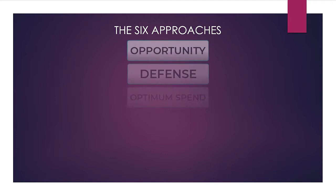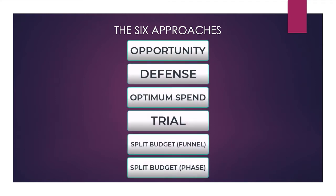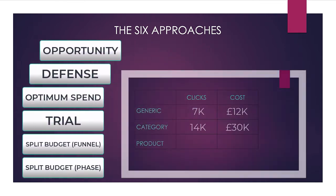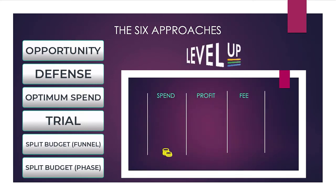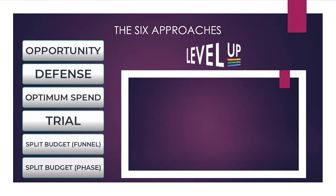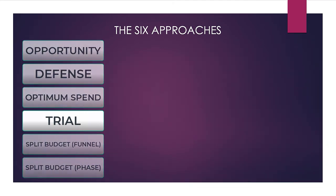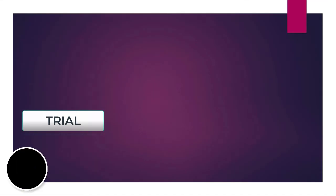I've broken it down into six different ways to look at and answer the budget question, any of which you might choose depending partly on your client's angle of approach, but also on which you see as the most appropriate method for the situation. These are all explored in detail in my course Google Ads Level Up. But in this video we'll dive into one of them — one that's particularly easy for clients to buy into when it's part of a proposal: the trial approach.